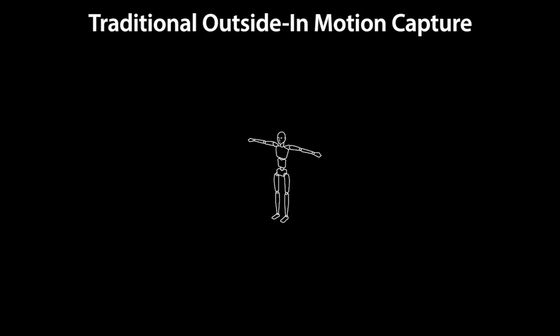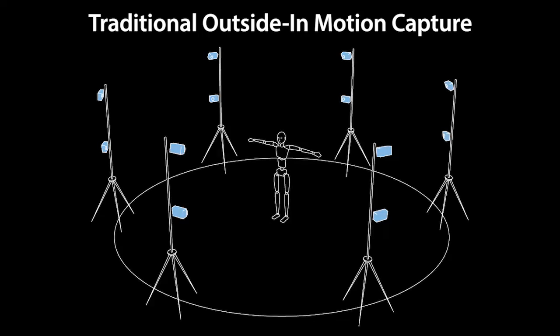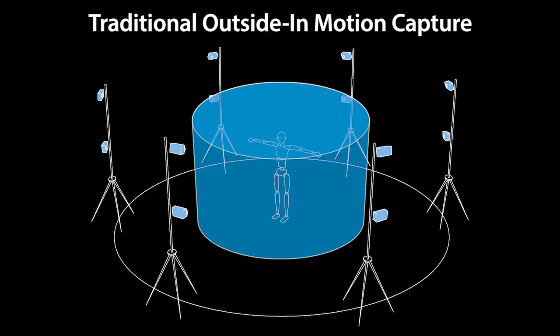Traditional optical motion capture methods use an outside-in arrangement of cameras placed around an actor with viewpoints converging in the center. Their recording volume is restricted to the overlap between camera views, which severely limits the range of motions that can be captured.